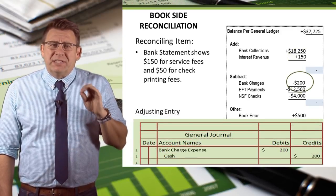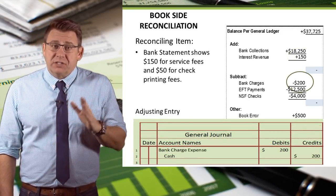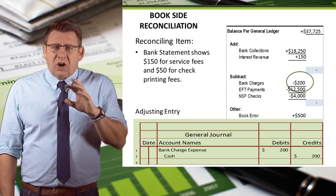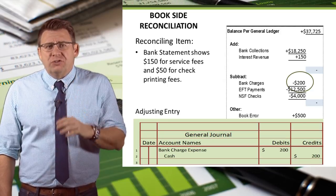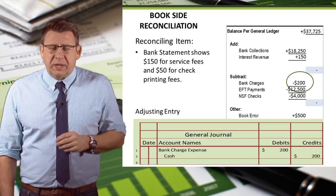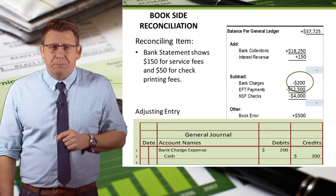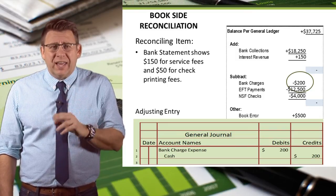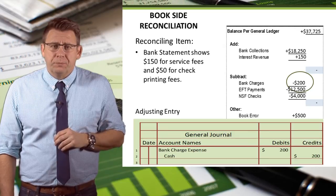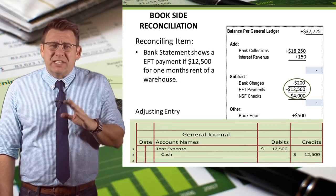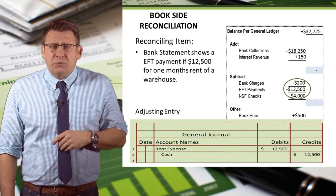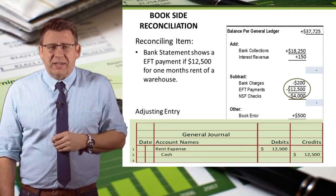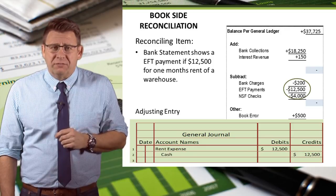The next item is a deduction from cash — it is a service charge. Often service charges are a miscellaneous expense, but I've chosen to use the bank service charge expense; it really depends on the company. So we would debit bank service charge expense and credit cash for $200. The next item is an EFT payment, which relates to one month's rent of a warehouse, so we debit rent expense and credit cash for $12,500.